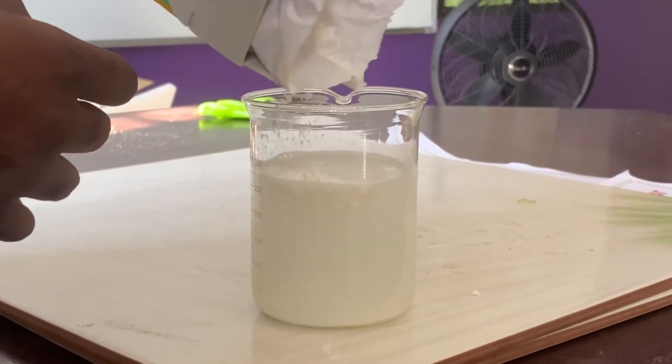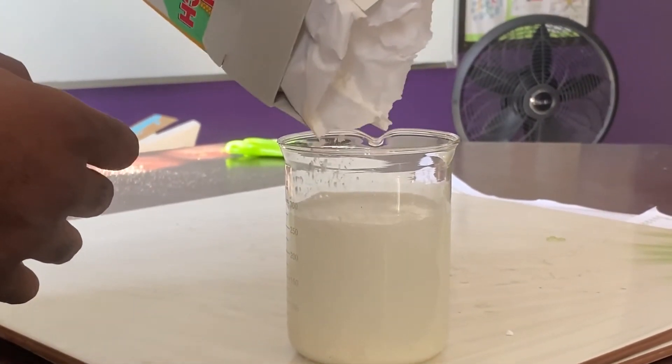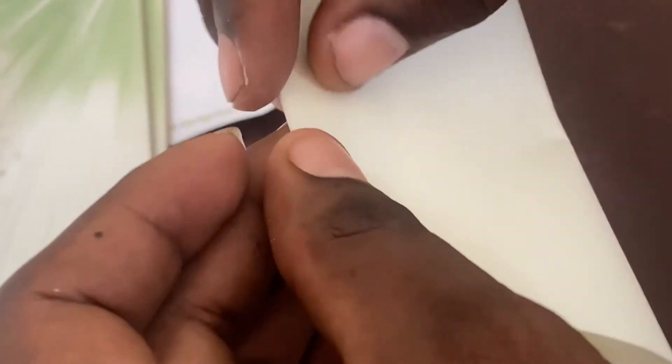For this lab, we will use a mixture of cornstarch and water. To ensure that the filtration takes place properly, the filter funnel needs to be fluted.